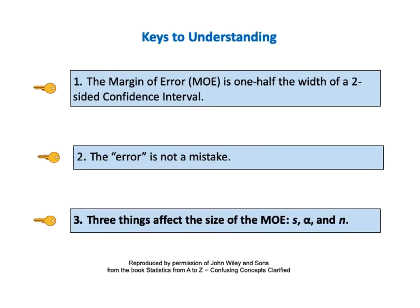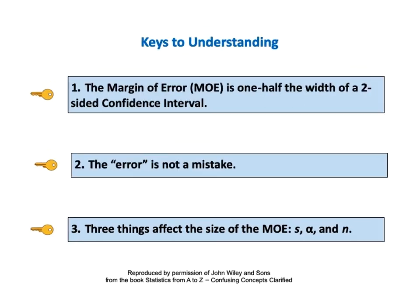Key number three says there are three things that affect the size of the margin of error: S, alpha, and N. And here on one page are all three keys to understanding the concept of the margin of error. You may wish to pause the video at this point and read them all together.